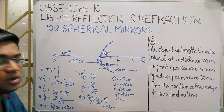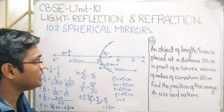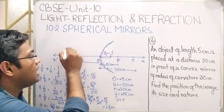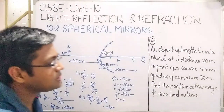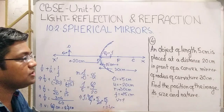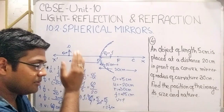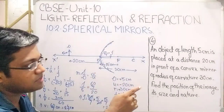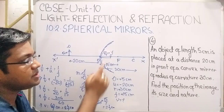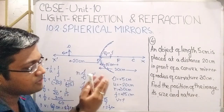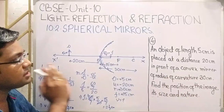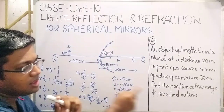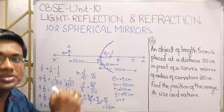The size of the image is approximately 2 point something cm, which is less than that of the object. The image is smaller than the object and is upright. The nature of the image is virtual, since it is behind the convex mirror. So the position of the image is at a distance 60 by 7 cm behind the convex mirror, its size is 15 by 7 cm or 2 and 1 by 7 cm, and the nature of the image is virtual.